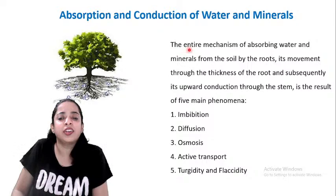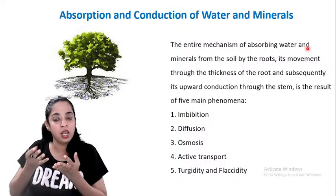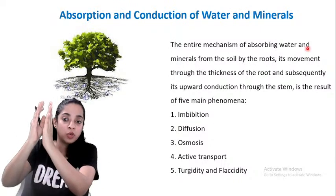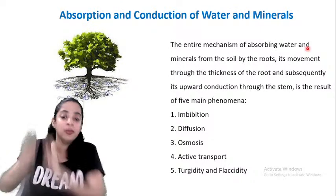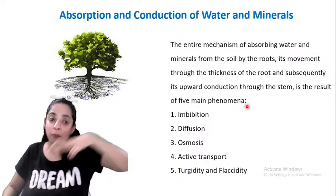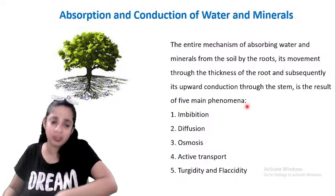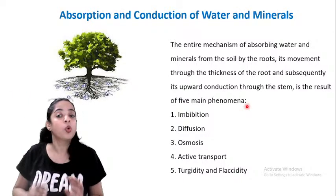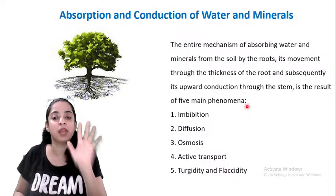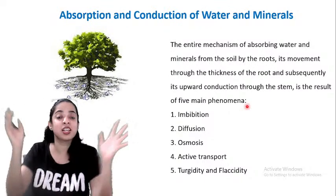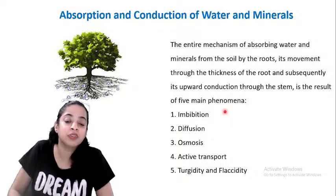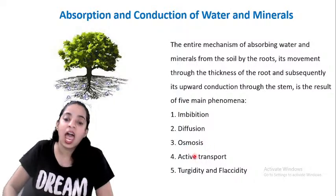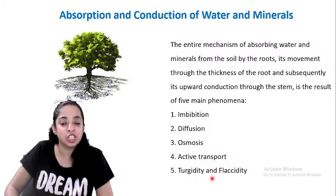The entire mechanism of absorbing water and minerals from the soil, its movement through the thickness of the root, and subsequently upward conduction through the stem is the result of five main phenomena: imbibition, diffusion, osmosis, active transport, and turgidity and flaccidity. We will talk about all five of these phenomena in detail.